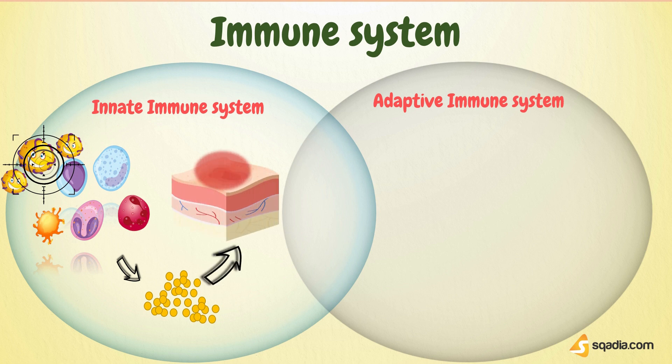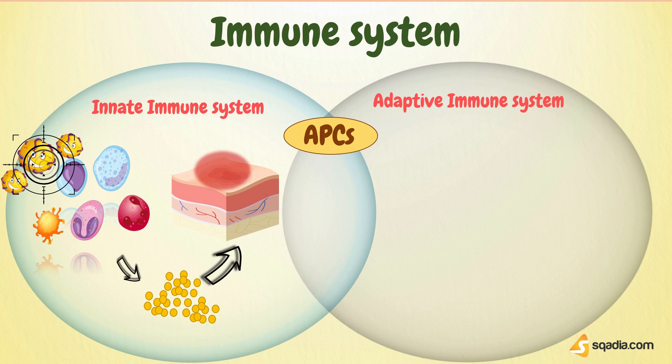Now here comes the class of cells that play a significant role at the junction of innate and adaptive immunity. They are called APCs, or antigen-presenting cells. As the name implies, these are the cells that present antigens to other cells, such as lymphocytes, and they are mainly macrophages, B cells, and dendritic cells.